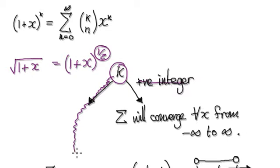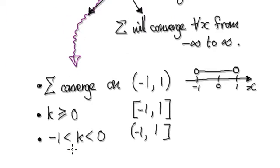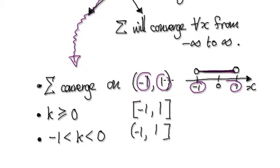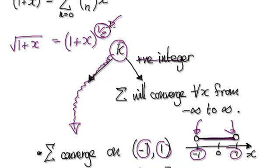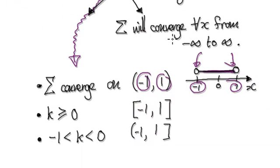So if k is not a positive integer, then the series will converge for all x in between negative 1 and 1. But if k is greater than 0, then you can include both endpoints. In our case here, k equals a half, which is bigger than 0, so we can include the endpoints negative 1 and positive 1.